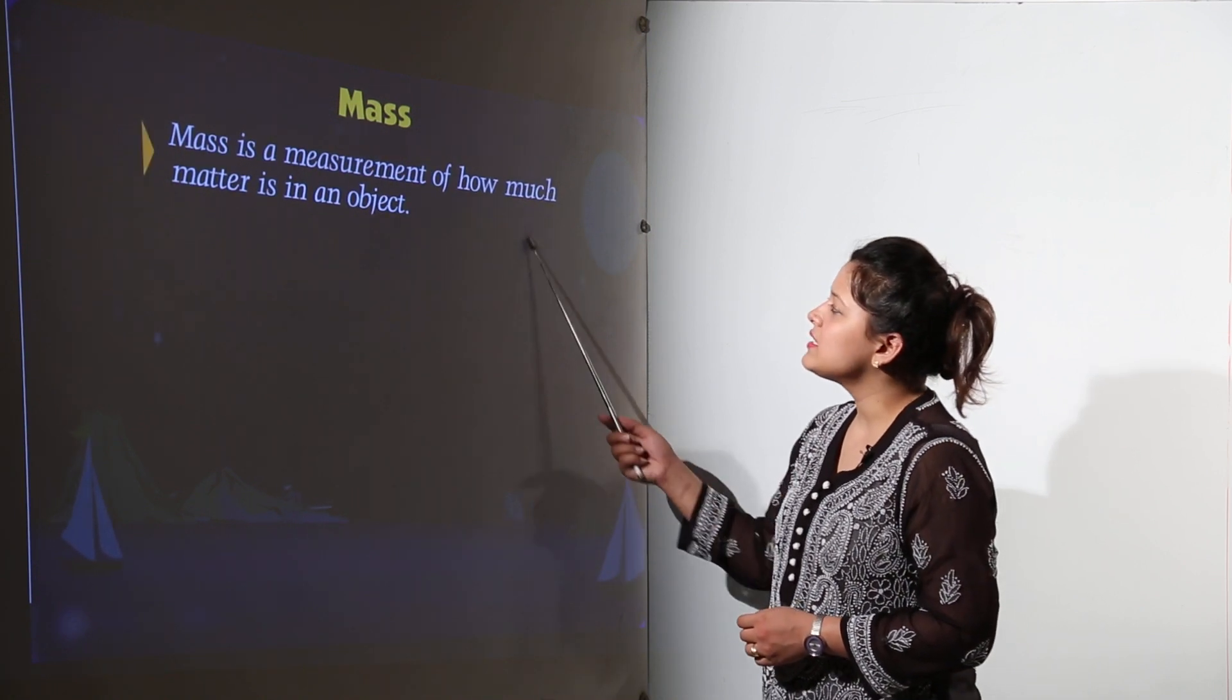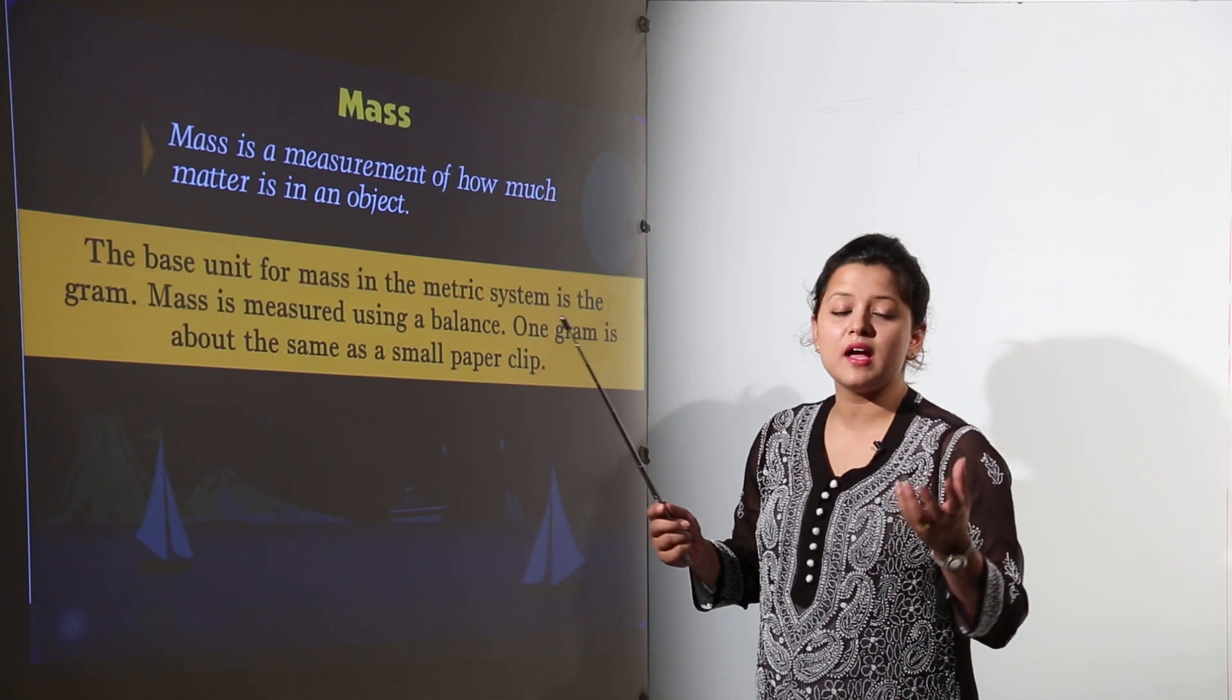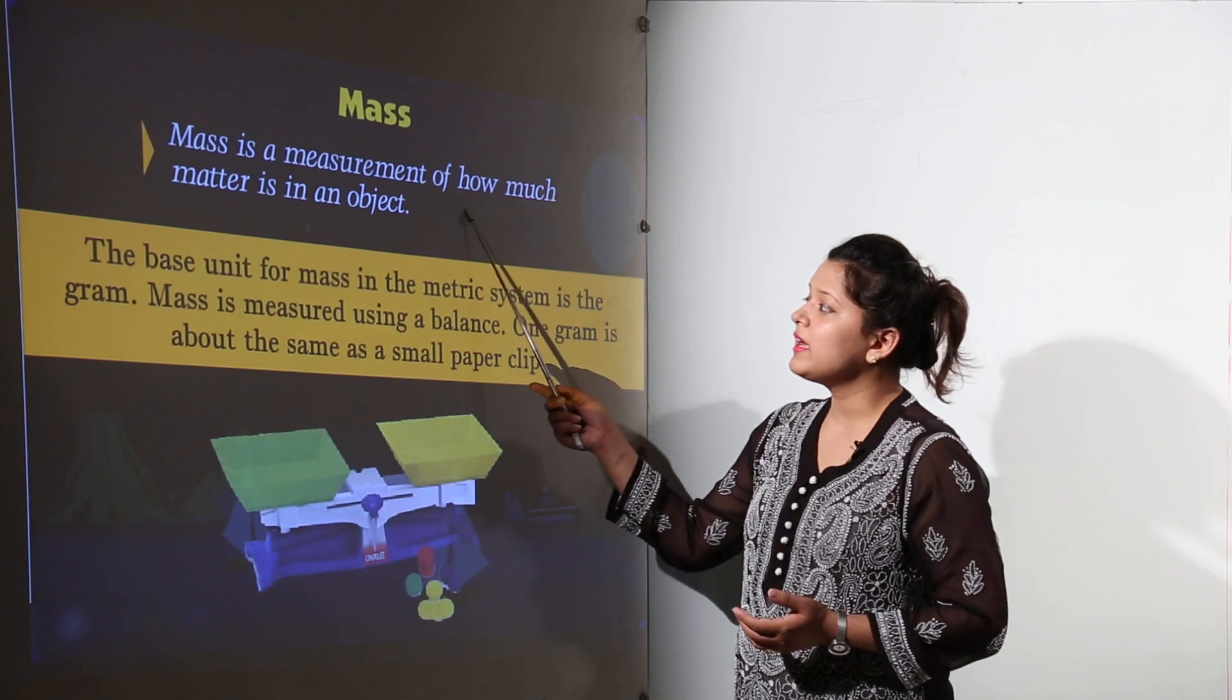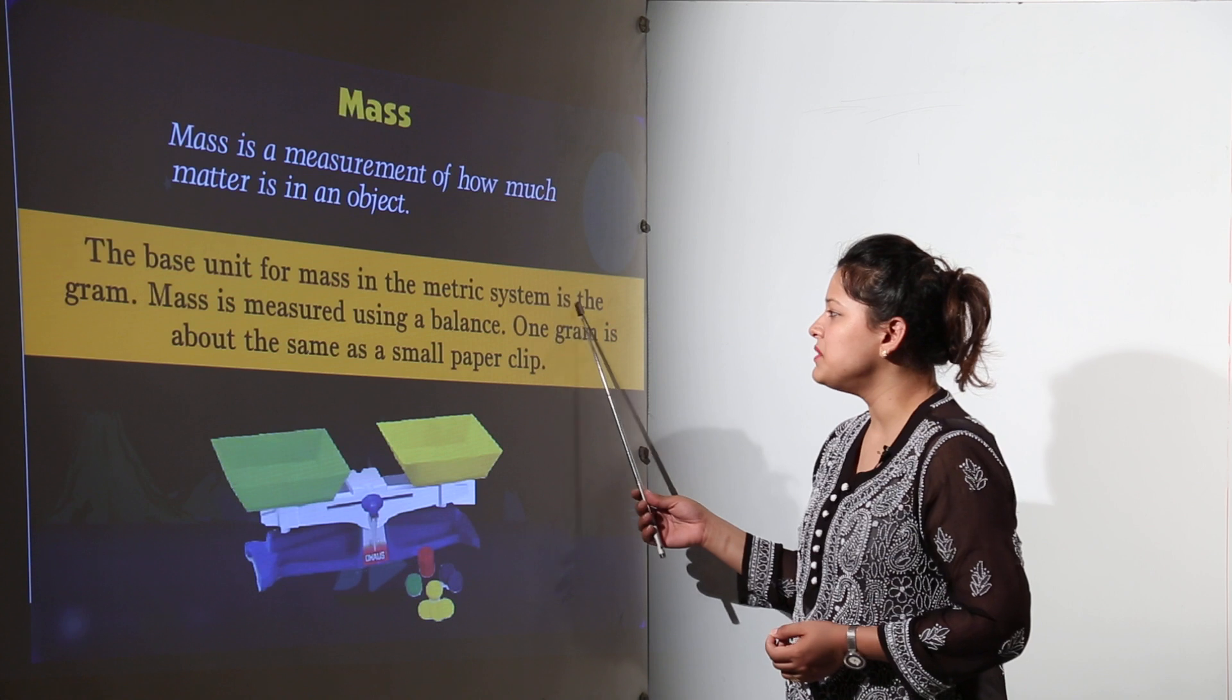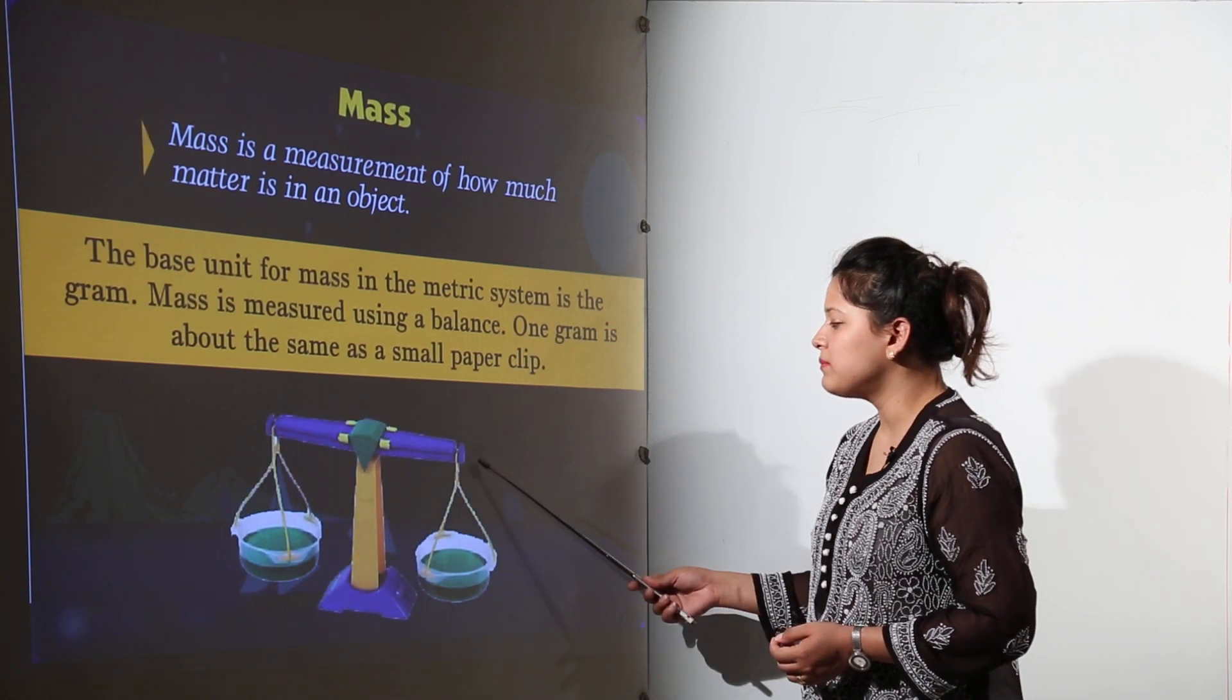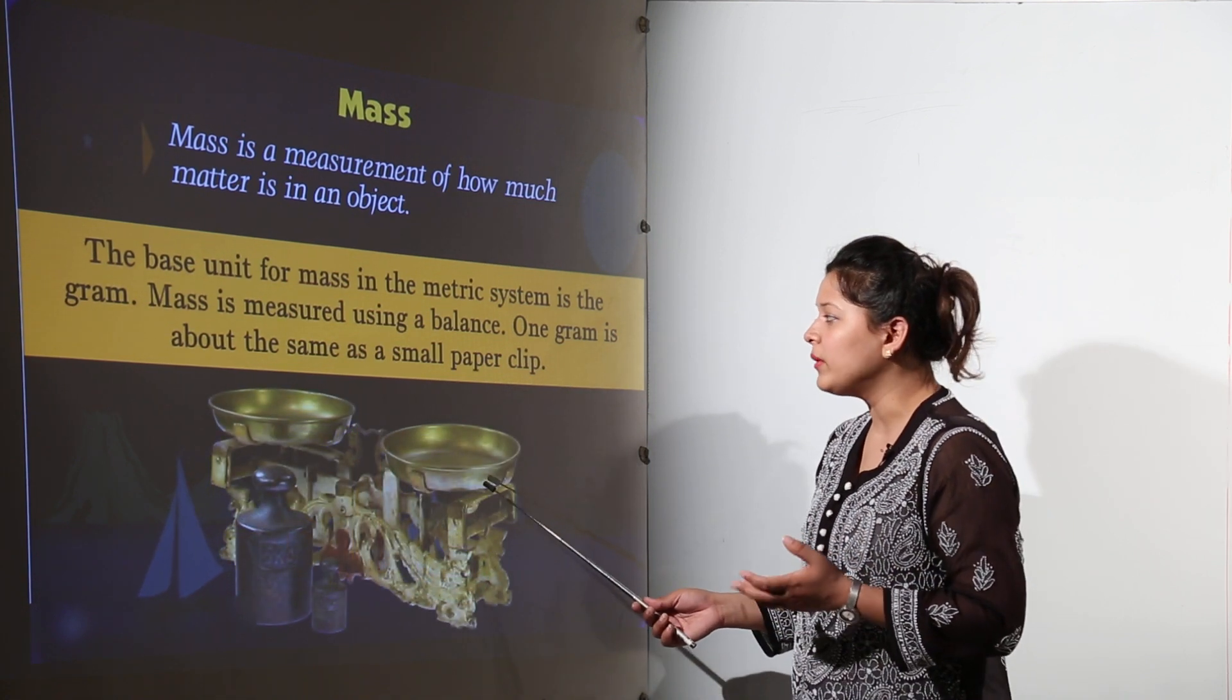The mass is the measurement of how much matter is in an object. An object is having how much of matter that will be its mass. So the base unit for mass in metric system is grams and it can be measured on the balance. We can observe it with the vegetable sellers these days most commonly.